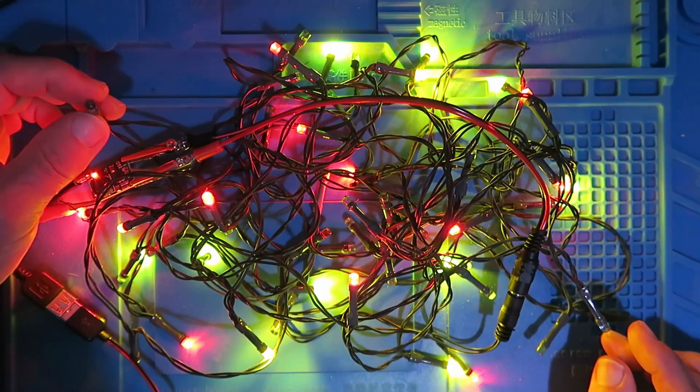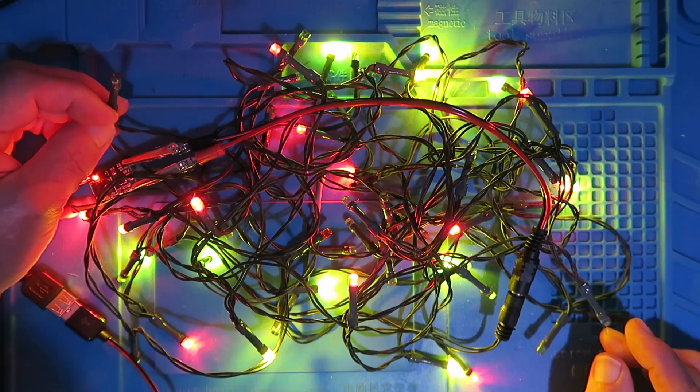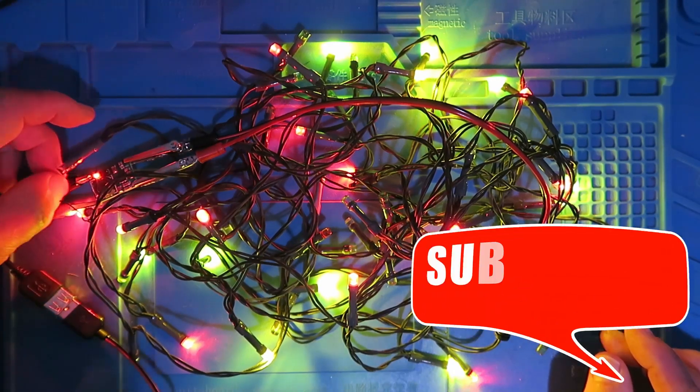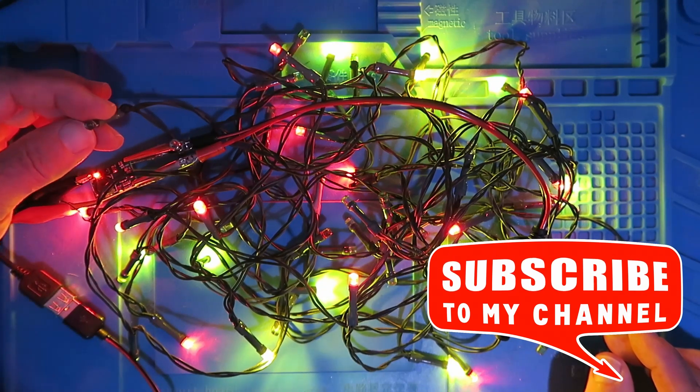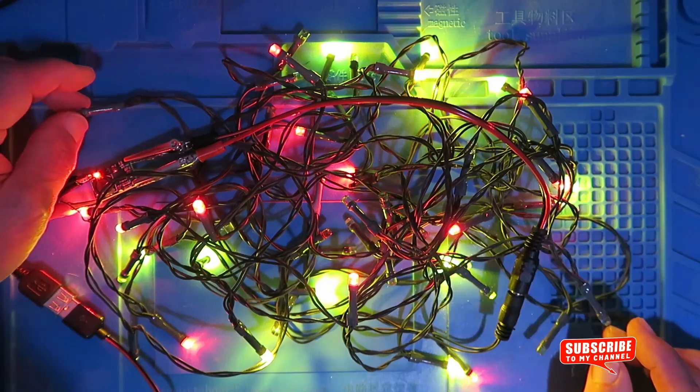However, the eagle-eyed among you will notice that there are some LEDs that are not lit. Now, these ones will be the blue LEDs. As you remember, they have a much higher forward voltage requirement, and I guess that the green and the red LEDs are hogging all the current and preventing the voltage getting sufficiently high for these LEDs to strike. But it's still quite a pleasing effect.